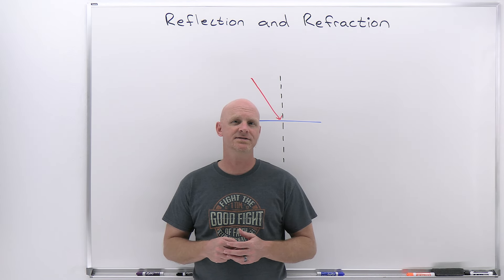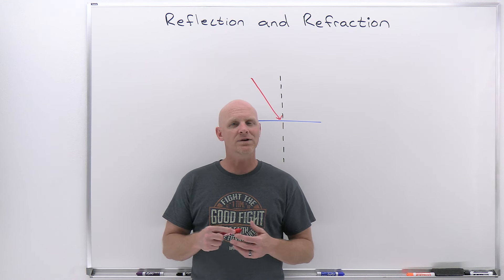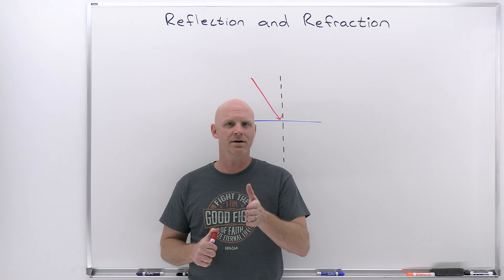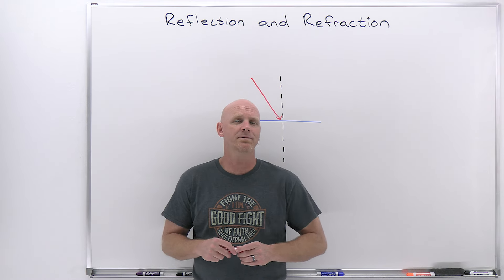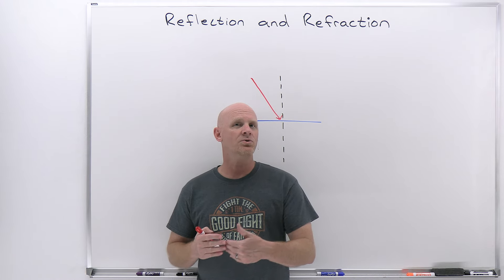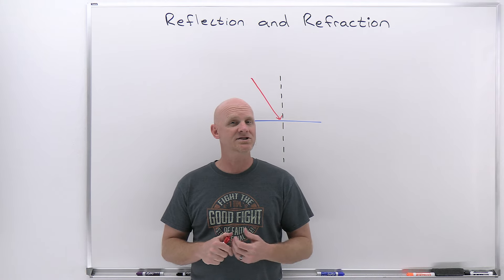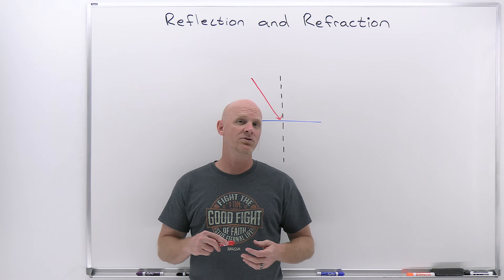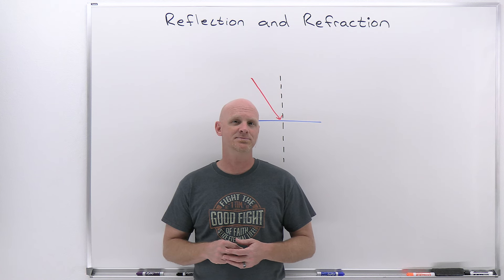Reflection and refraction are going to be the topics of this lesson in my new general physics playlist, which when complete will cover a full year of university algebra-based physics. When light is traveling from one medium to the next, a couple different things might happen at that interface. The first might be reflection, but the light that is actually transmitted into the next medium, provided it's transparent, bends a little bit — we call this refraction. We're going to talk about the index of refraction, Snell's law of refraction, the special case of total internal reflection, and dispersion.